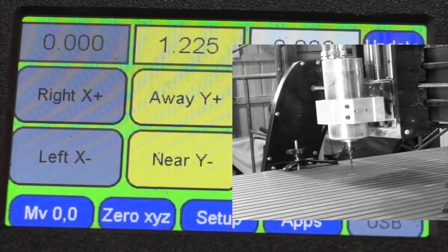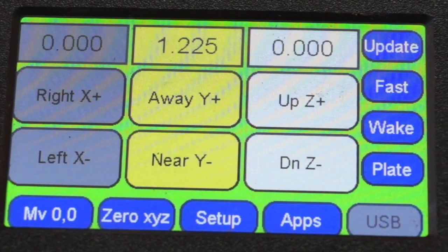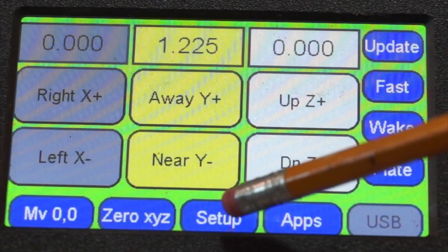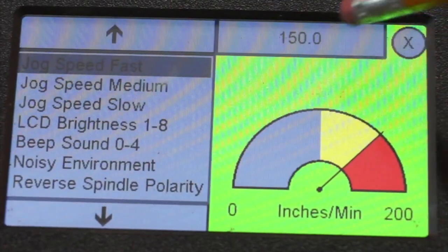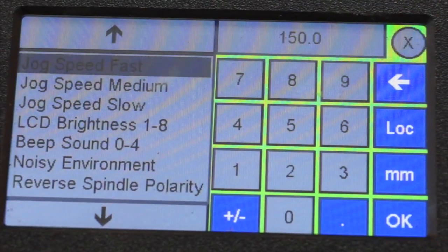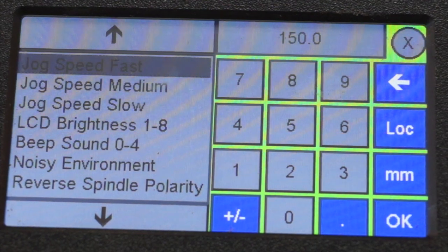I want to change that. I don't really, because I'm going to change it back. But just to show you how to do it, you simply go to setup, hit fast jog speed, and you click on the speed that it's at. And I always write it down, 150.